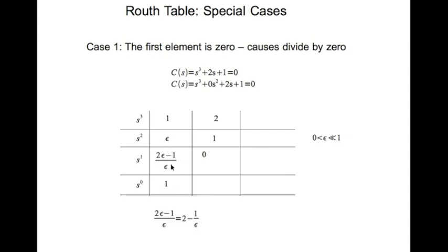Now let's look at this entry here. We can write this 2 epsilon minus 1 divided by epsilon is 2 minus 1 divided by epsilon. Since epsilon is a very small positive number, 1 divided by epsilon is a very large positive number, 2 minus a large positive number is very much less than 0. So this is negative. You have positive, positive, negative, positive, two sign changes.